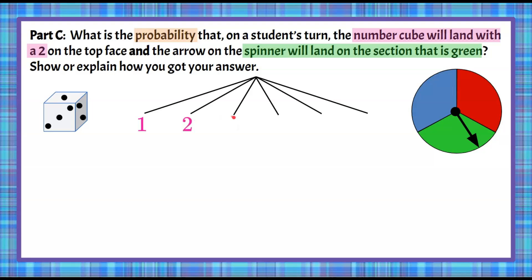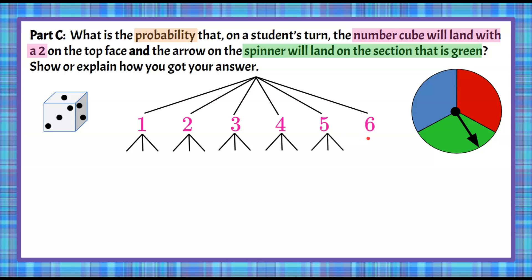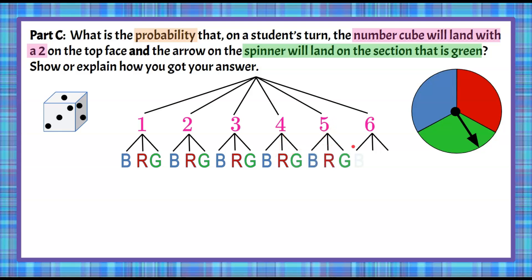The second event is spinning the spinner, which has three outcomes: blue, red, or green. Each of the six branches from the first event gets three sub-branches — one for each spinner color. So from each number rolled, we branch out to blue, red, and green. This gives us combinations like 2-blue, 2-red, 2-green, 3-blue, 3-red, 3-green, and so on through all six numbers. Our tree diagram is now complete.